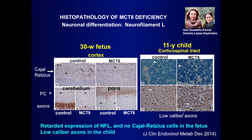This is something that we also see in hypothyroid rats or mice. In the cerebellum, for example, there is also altered neurofilament expression. You can see that the axons are of very low caliber. This is a cross-section of axons stained with neurofilament. You can see that in the normal brain the diameter is thick, whereas in the MCT8 fetus it is narrow.